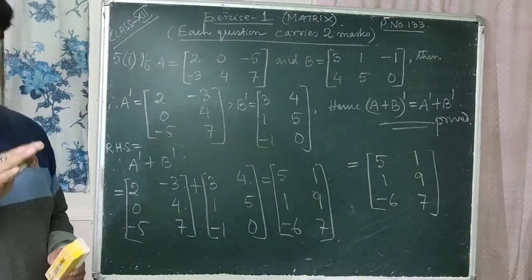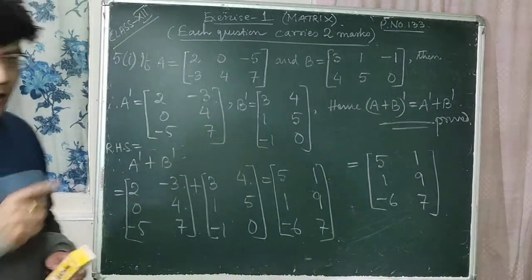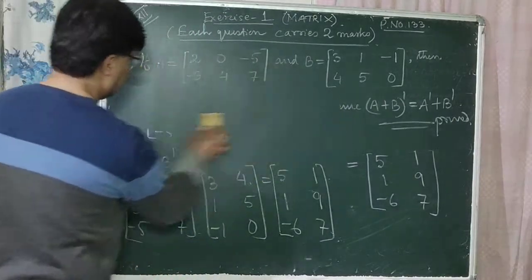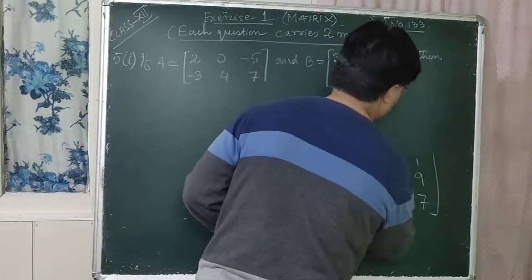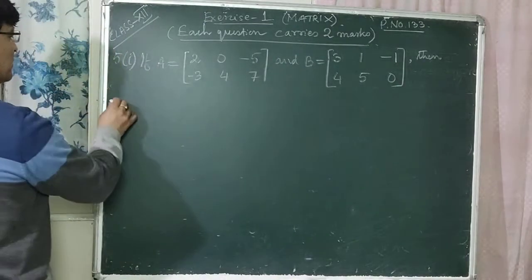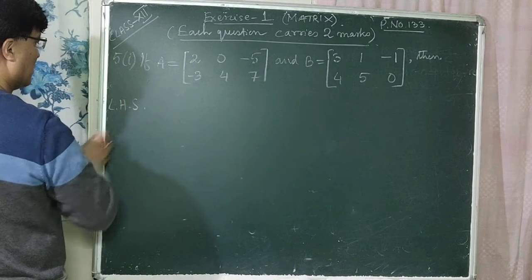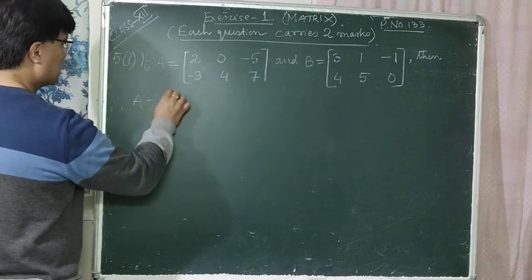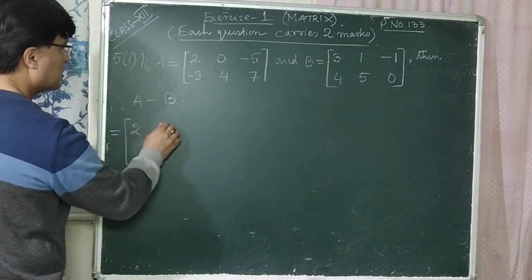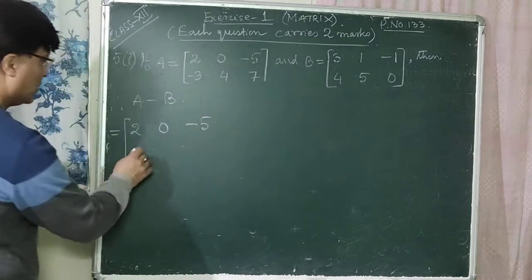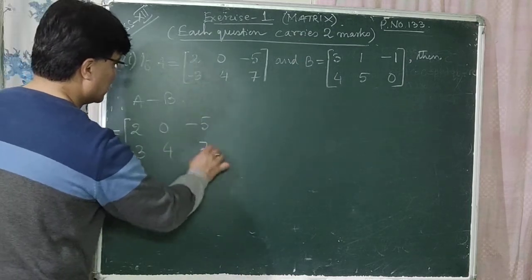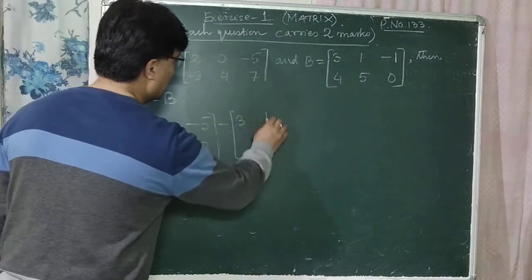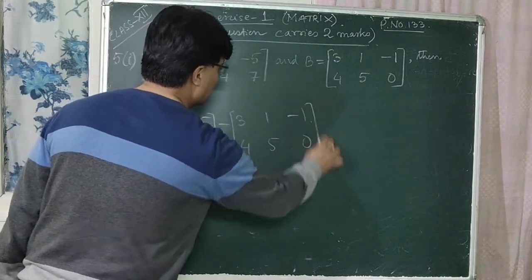Now for part (b), we have to prove (A-B) dash is equal to A dash minus B dash. Let us find A minus B first. A is: 2, 0, -5 and -3, 4, 7. B is: 3, 1, -1 and 4, 5, 0.